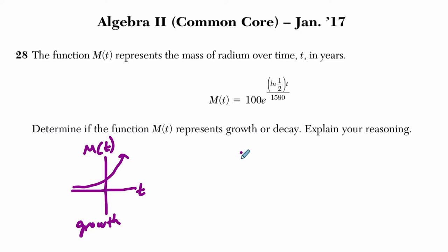And then here, decay is essentially this, right? The exponential function is decreasing, where the height is decreasing as t increases. And that's called decay.